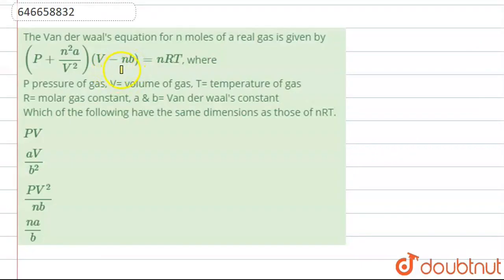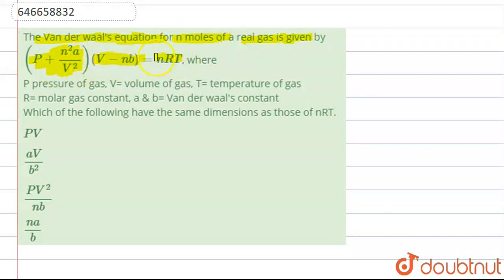Hello students. Now we're going to see this question. The question says that the Van der Waals equation for n moles of a real gas is given by: (P + n²A/V²)(V − nB) = nRT, where P is the pressure of the gas, V is the volume of the gas, T is the temperature, R is the molar gas constant, and A and B are Van der Waals constants. Which of the following will have the same dimensions as nRT?